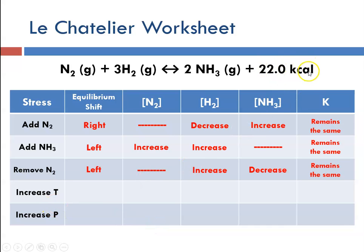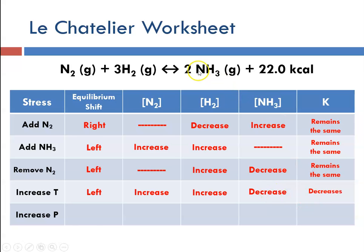This is an exothermic reaction. If we increase the temperature, it's going to shift to the left to reduce that temperature change. We can expect increases in the reactant concentrations and a decrease in the product concentration. Since we're shifting left and increasing the concentration of reactants, which are in the denominator, the K value will decrease.